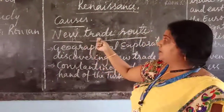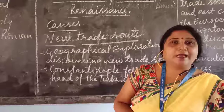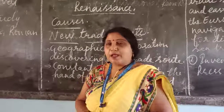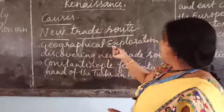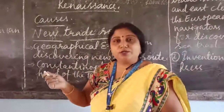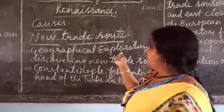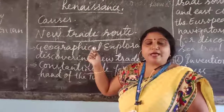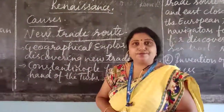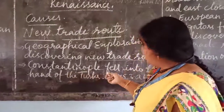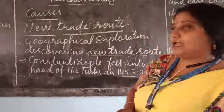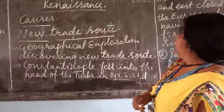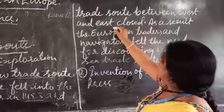We will start with the new trade route. At that time, Spain and Portugal navigators liked to have geographical exploration, discovering new trade routes. This was one of the reasons. The next: Constantinople fell into the hands of the Turks in 1453 AD.